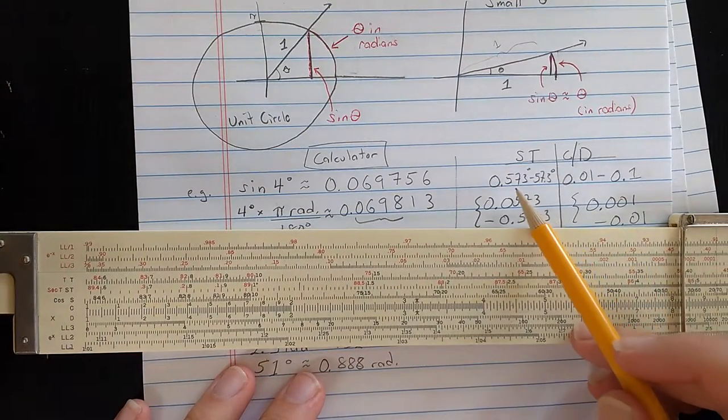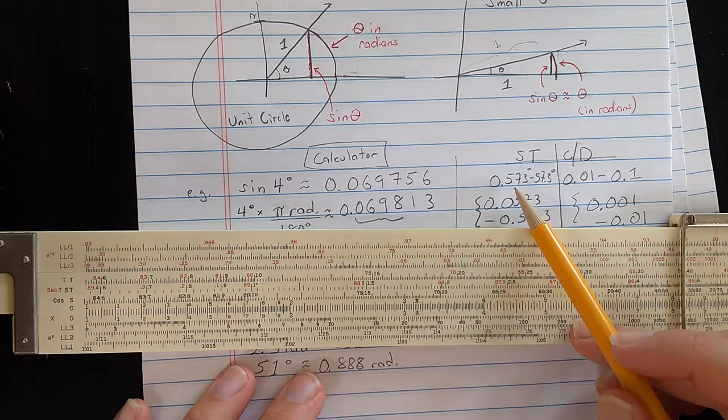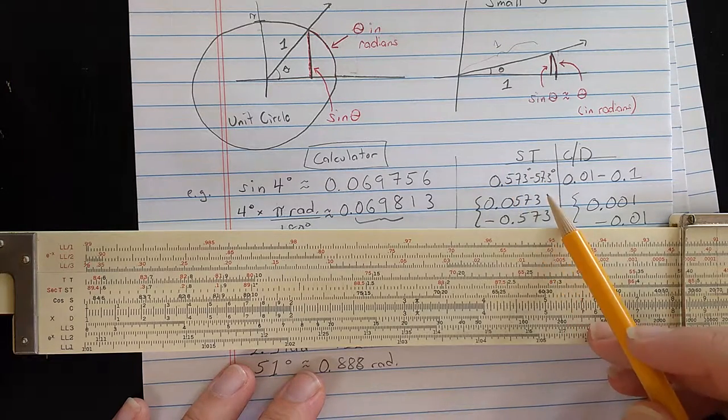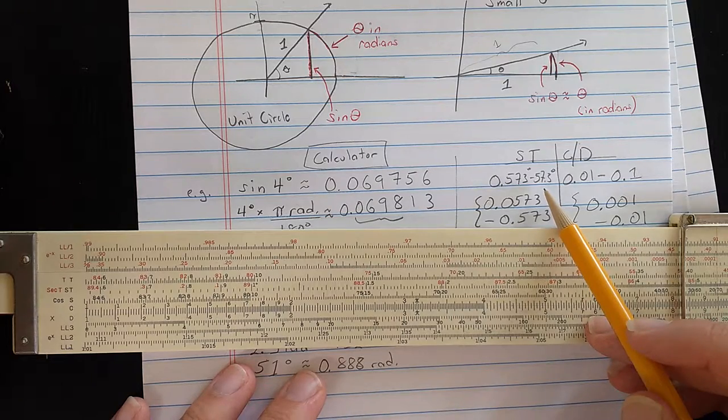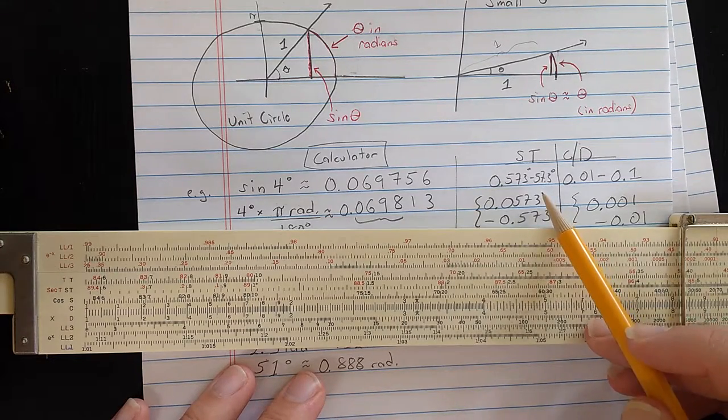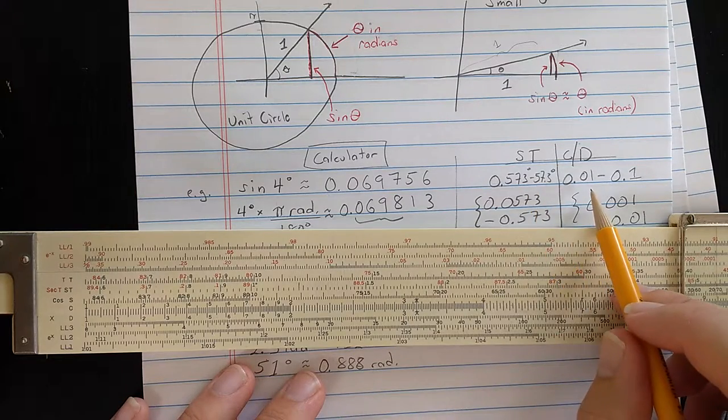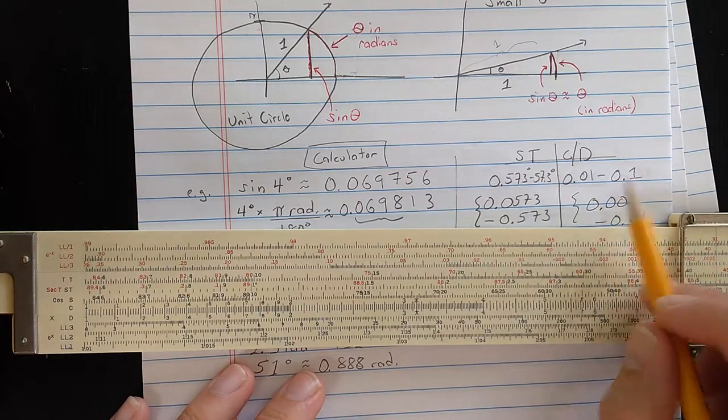The ST scale is used for angles, for sines or tangents of angles, between 0.573 degrees and 57.3 degrees. And for sines or tangents, those will be between 0.01 and 0.1.